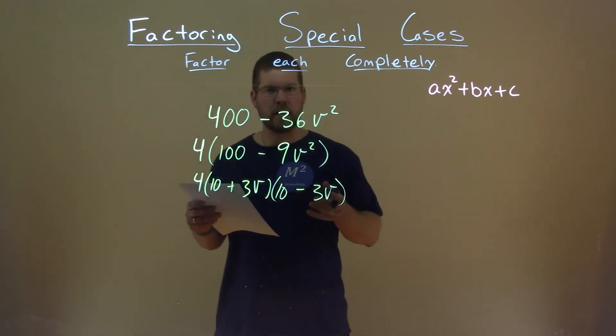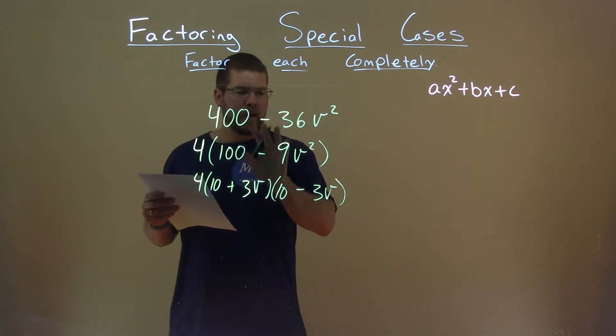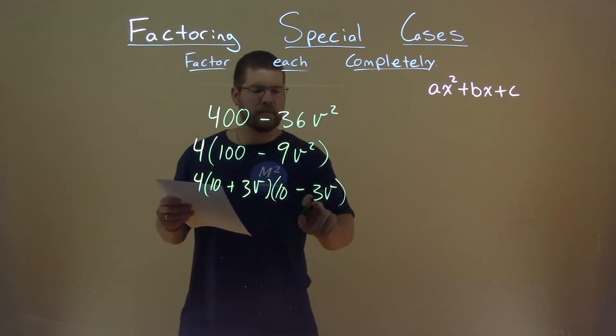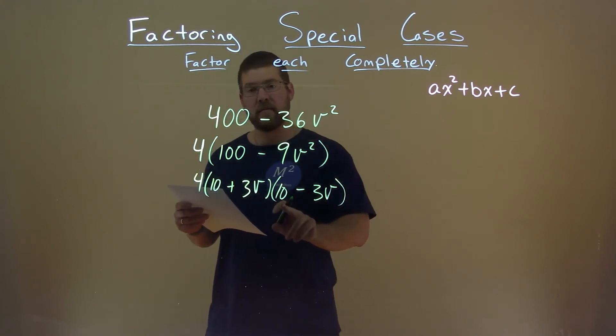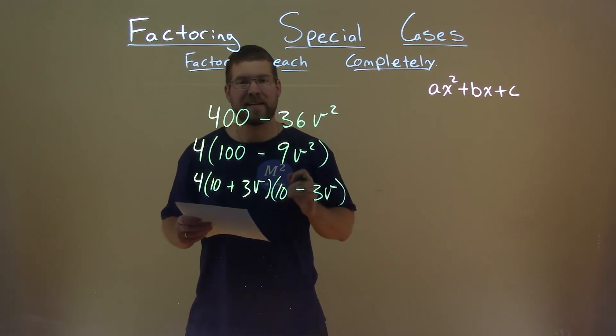But how do we know if this is correct? We have a V value in here that's 0. 10 times negative 3V is negative 30V. 3V times 10 is positive 30V. Add them together, we get 0.